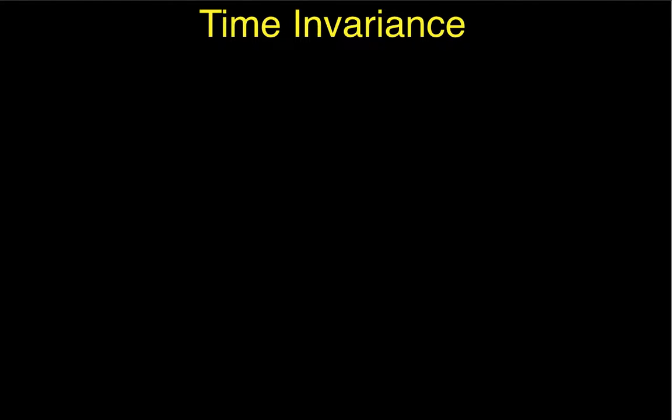The purpose of this video is to introduce conceptually the idea of a system property called time invariance. The basic idea is that a time invariant system does not change during or as a function of time. A time-varying system changes. So a time invariant system — if I put something in and get it out today, and put the same thing in and get it out tomorrow, I'll get the same thing out both times. But with a time-varying system, what the system does to an input today may be completely different than what it does tomorrow.